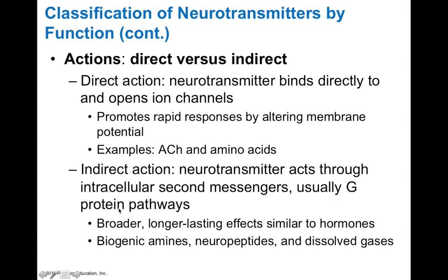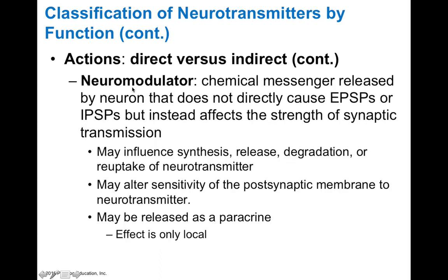Neuromodulators are chemical messengers released by a neuron that don't directly cause EPSPs or IPSPs but rather affect the strength of synaptic transmission. A neuromodulator can influence the synthesis, release, degradation, or reuptake of a neurotransmitter, so it indirectly has an effect on the target cell. It can also alter sensitivity of the postsynaptic membrane, making the postsynaptic cell either more or less sensitive to a neurotransmitter.